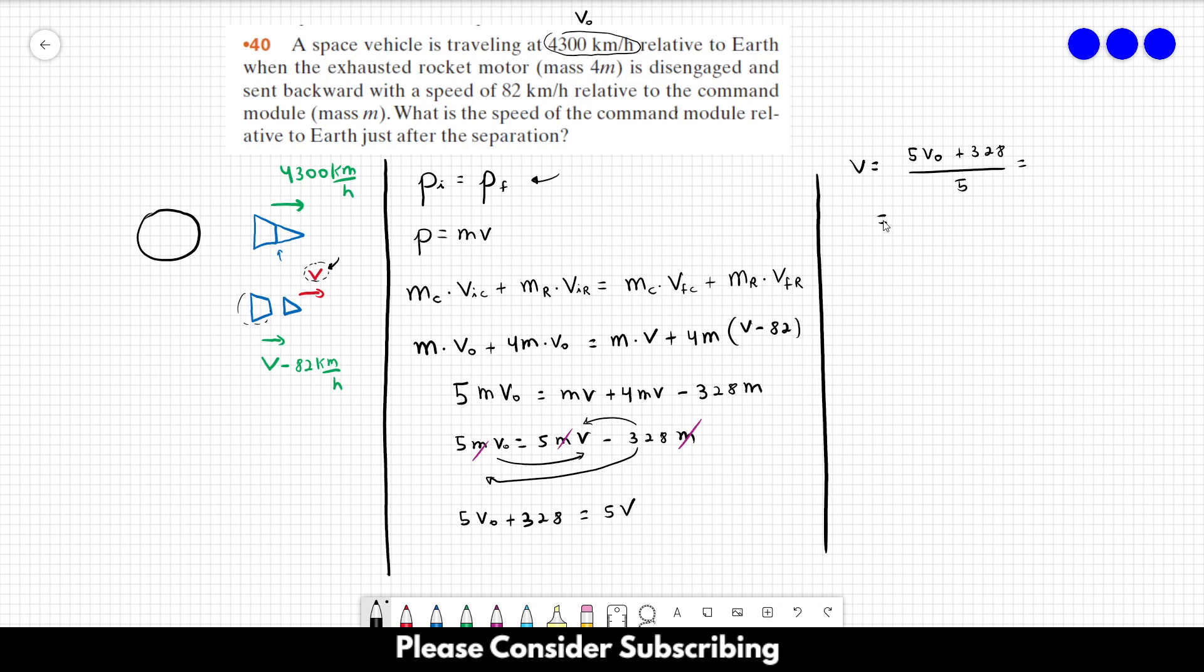So this is going to be 5 times 4,300 plus 328 divided by 5, and this should give us 4,365.6 kilometers per hour, and that's the answer to this problem.